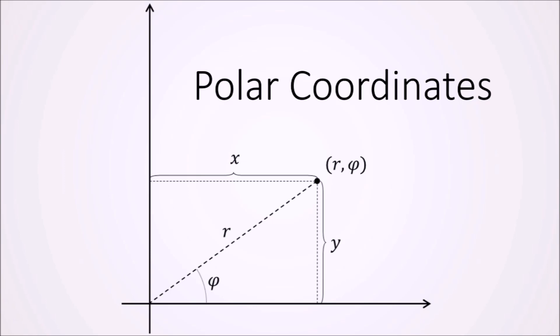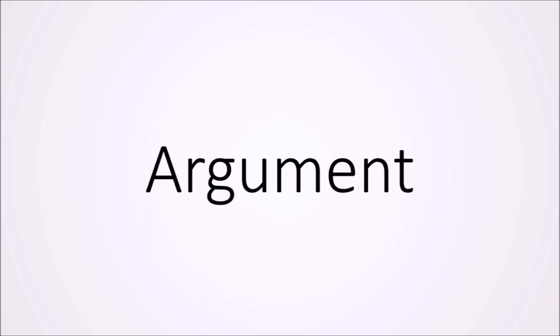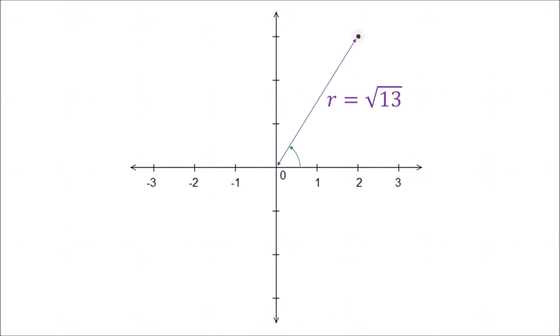In our number plane, that is the axis with a positive classic numbers. This angle is called the argument, which we give the Greek letter phi. The argument of 2 plus 3i is about 56.3 degrees.